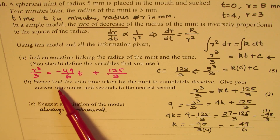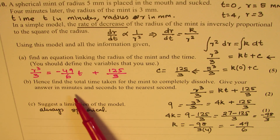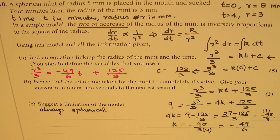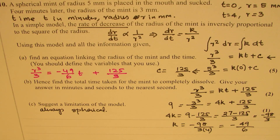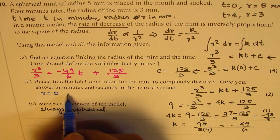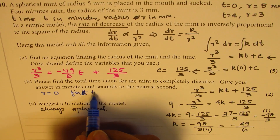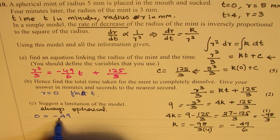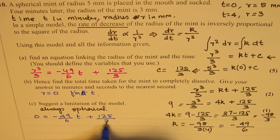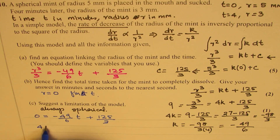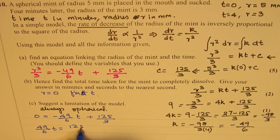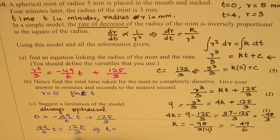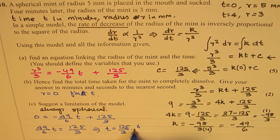For part B, we need to find the total time taken for the mint to completely dissolve, giving the answer in minutes and seconds to the nearest second. Completely dissolve means r becomes 0. So we set r equals 0 and find t. Substituting into the equation: 0 equals minus 49t over 6 plus 125 over 3.